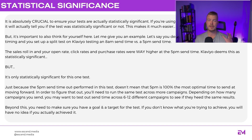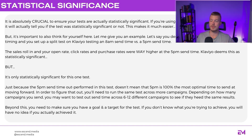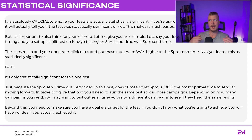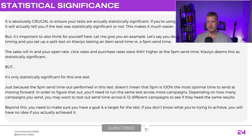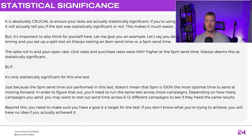Just because 5 p.m. outperformed in one test doesn't mean 5 p.m. is 100% optimal every time. To figure that out you need to run multiple tests across the same types of campaigns — possibly over six to twelve different campaigns — to see if you're actually seeing a trend. You also need to make sure you have a clear goal and target for your test; if you don't know what you're trying to achieve, you'll have no idea if you achieved it.